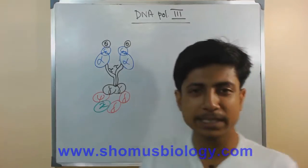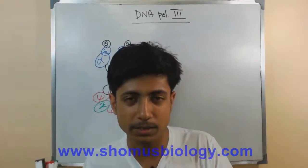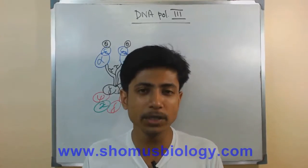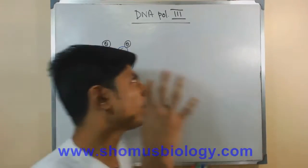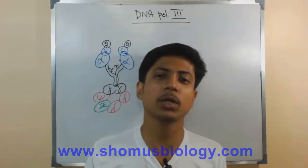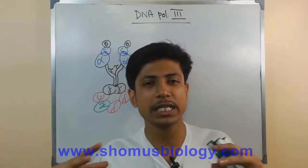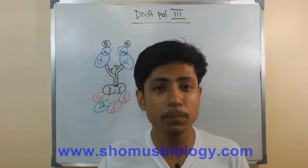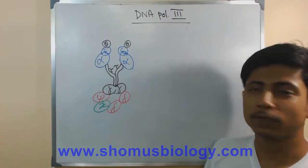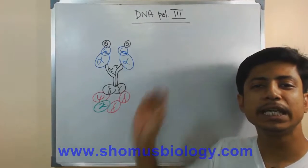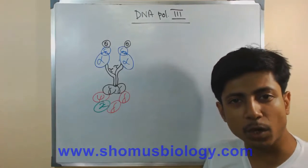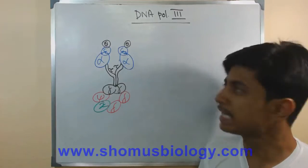In the case of DNA replication in prokaryotes, DNA Polymerase 3 and DNA Polymerase 1 are the major types with major functions in DNA replication. Among them, the functionality of DNA Polymerase 3 is the most important, and it is very much more complex than DNA Polymerase 1.